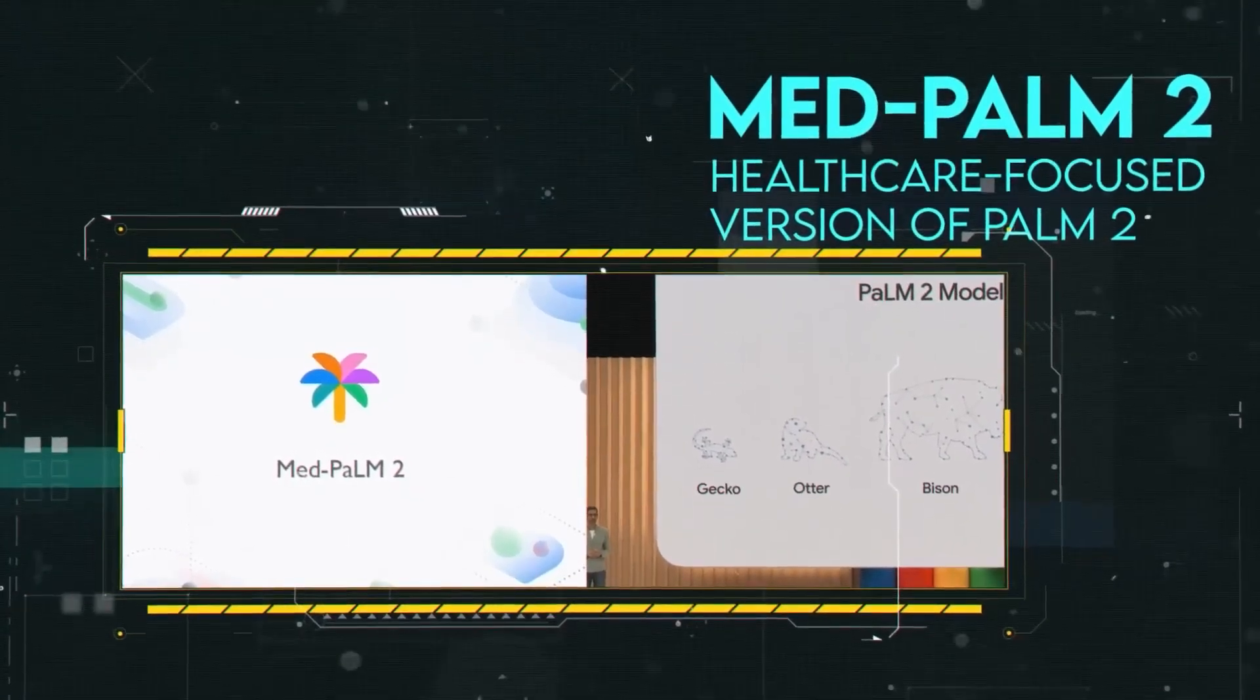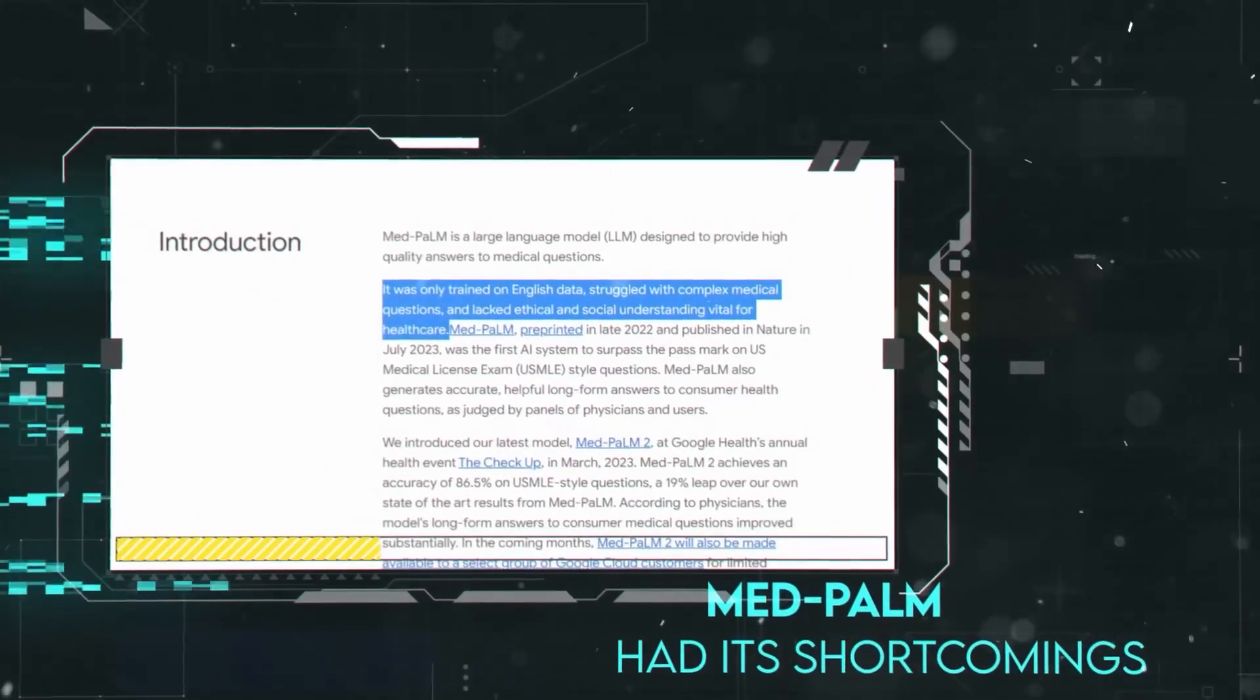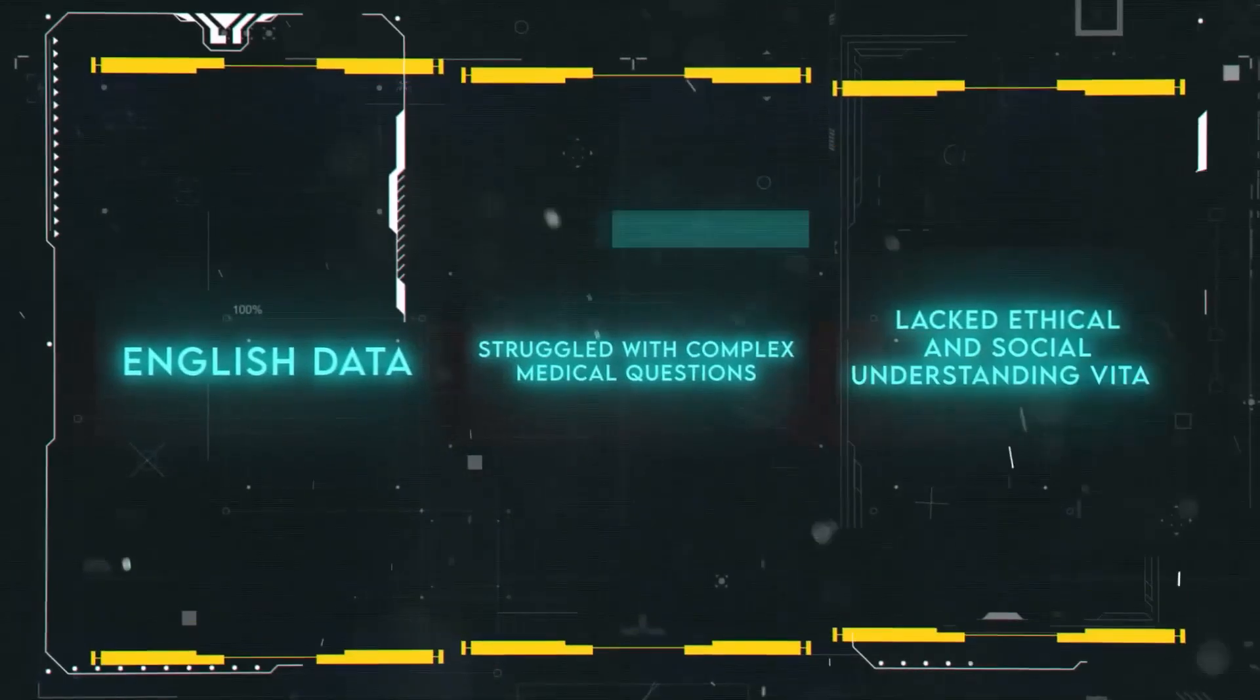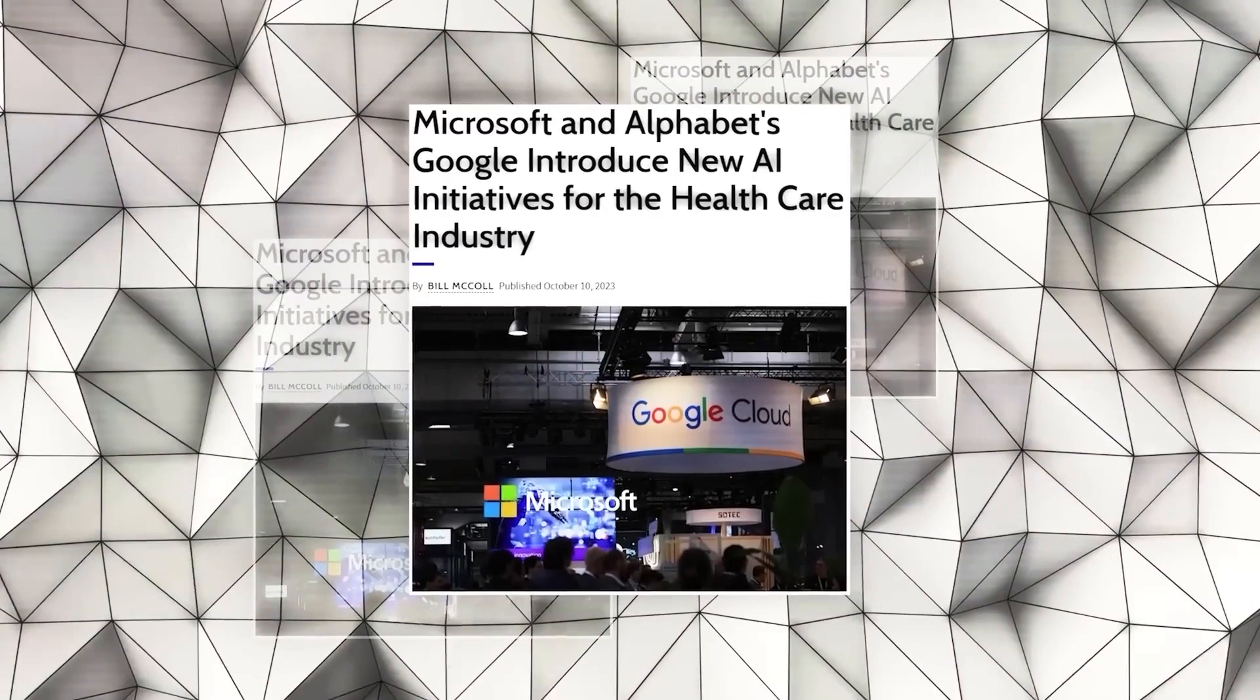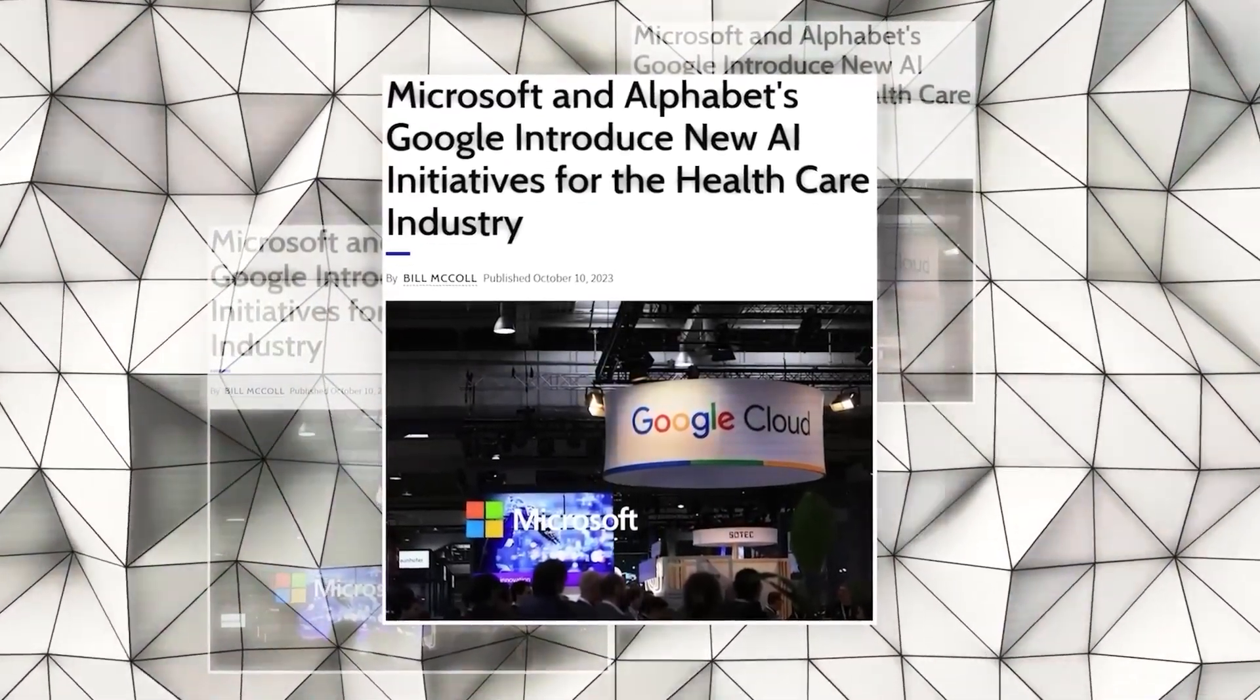Google Research is another branch of Google that conducts interdisciplinary and collaborative research on AI and related topics. Their contributions to healthcare and medicine include natural language processing, computer vision, and data mining. They have developed models for medical question answering, medical imaging analysis, and medical data analysis, all of which have improved healthcare outcomes.